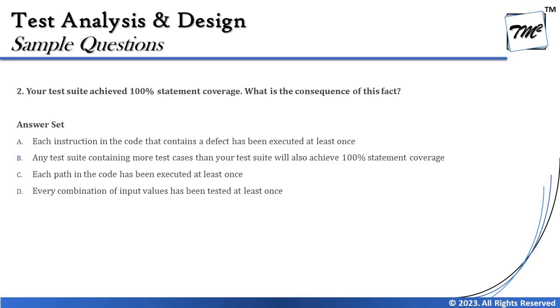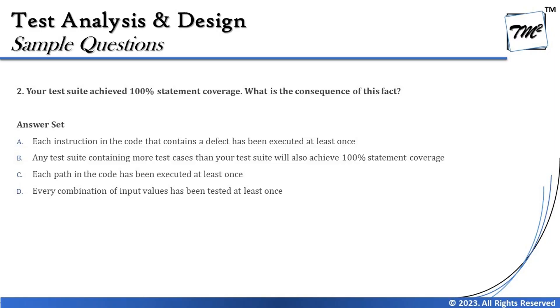Option A says: 'Each instruction in the code that contains a defect has been executed at least once.' That is the straightforward definition of 100% statement coverage — all the statements have been tried out. Whenever you achieve 100% statement coverage, it means every single node has been tested completely. That looks correct, but let's cross-check with B, C, and D.